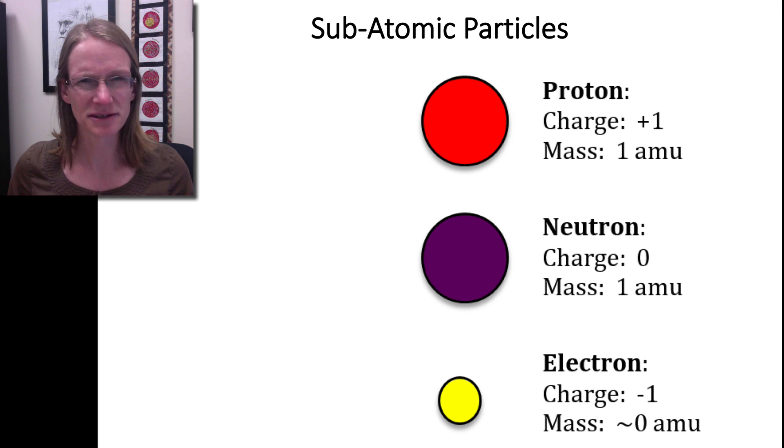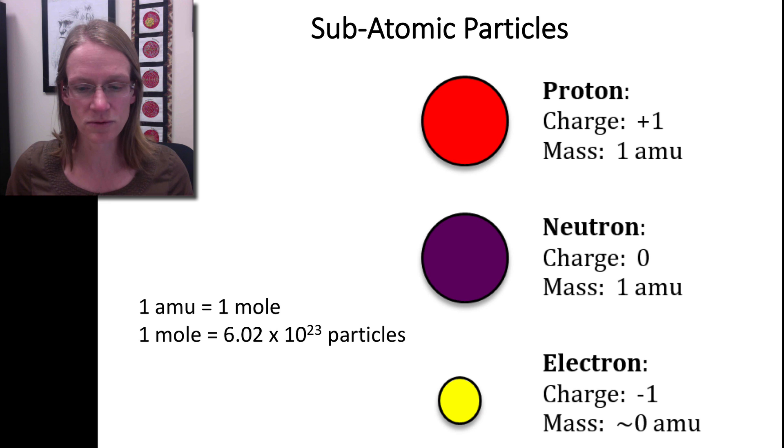They are each about the same mass, about one atomic mass unit. You may be asking what is an atomic mass unit? It's the weight of one mole of whatever you're measuring. And what is a mole? A mole is 6.02 times 10 to the 23rd particles—in essence, a whole lot of particles.